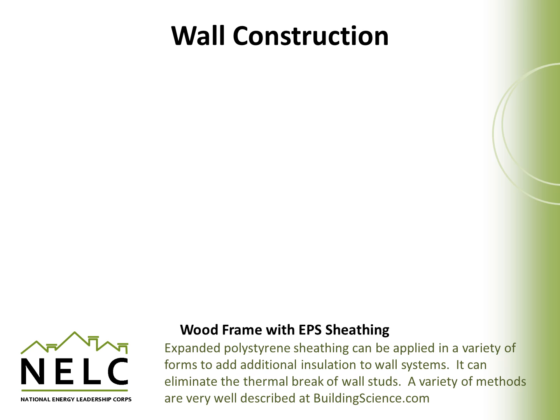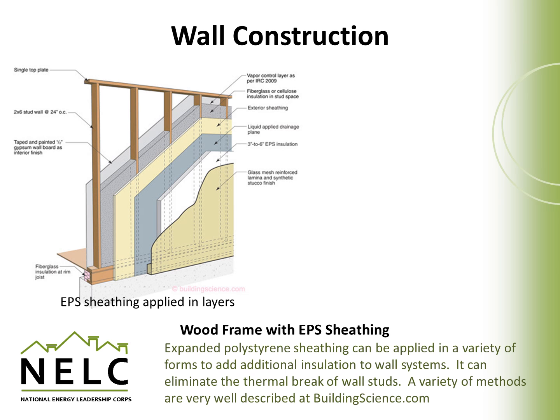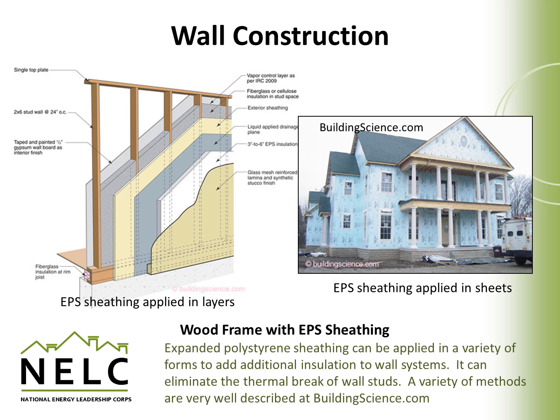Wood framing with EPS sheathing is a technique that's not as common as regular wall framing, but it does provide an opportunity to add much additional insulation to a traditional wall system. It can be applied in layers and built up with variable techniques and specialty materials, and also applied as sheathing over top of a traditionally framed wall. One of its biggest advantages is that it eliminates the thermal break that a wall stud introduces, because wall studs interrupt the insulation in our wall framing. The EPS sheathing spans across that and provides a continuous surface of insulation, which can dramatically improve the performance of a wall. Buildingscience.com has a great description of different techniques of applying EPS sheathing and their respective properties.